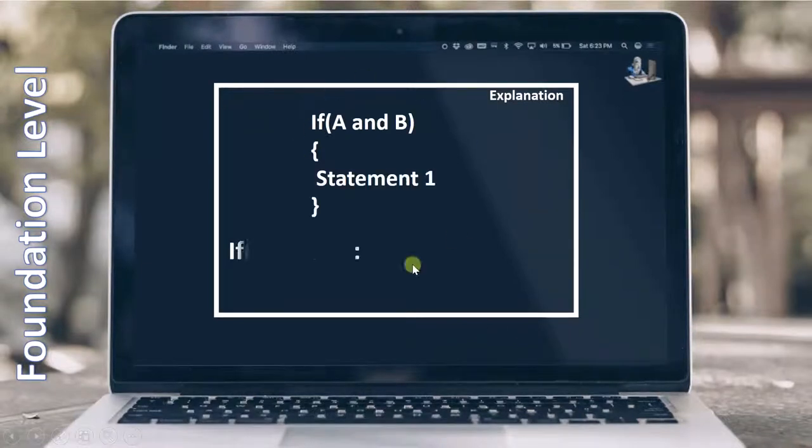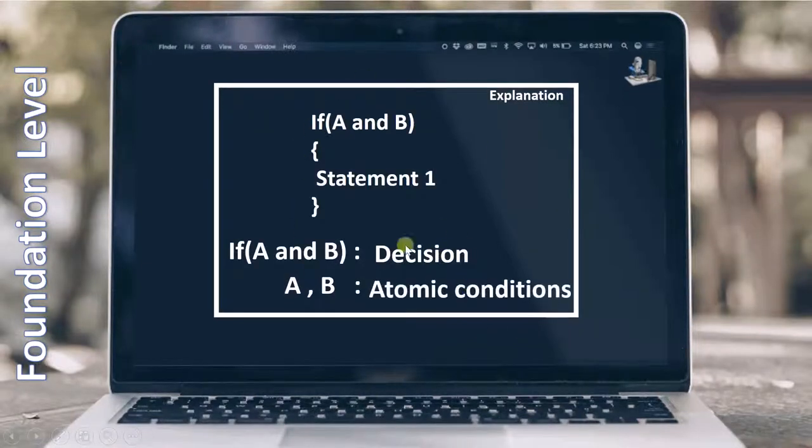You have already seen this particular example wherein if A and B as a whole is a decision, whereas inside this decision there are two conditions A and B, and individually they are called atomic conditions. Now if we have to perform decision testing on it, then the whole decision has to become true once and false once. Then only we can say that we have covered 100% decision.